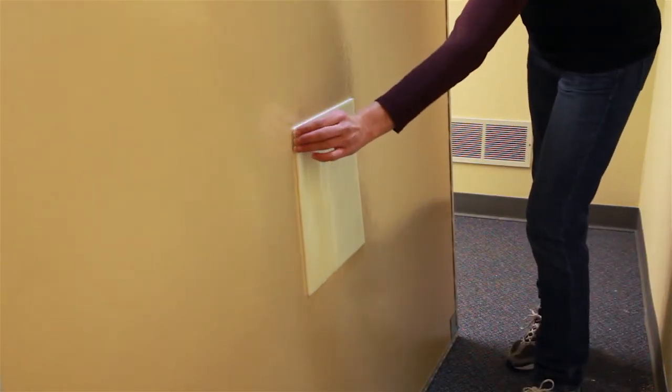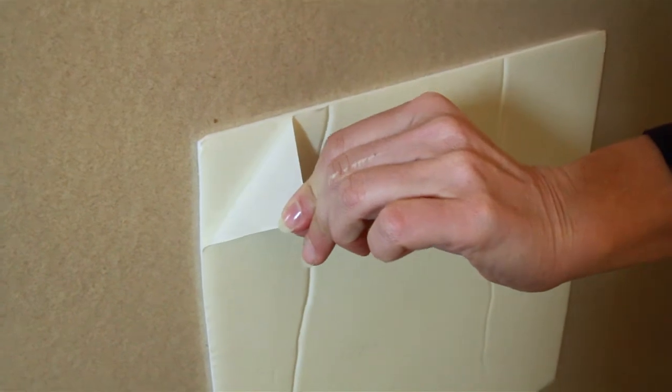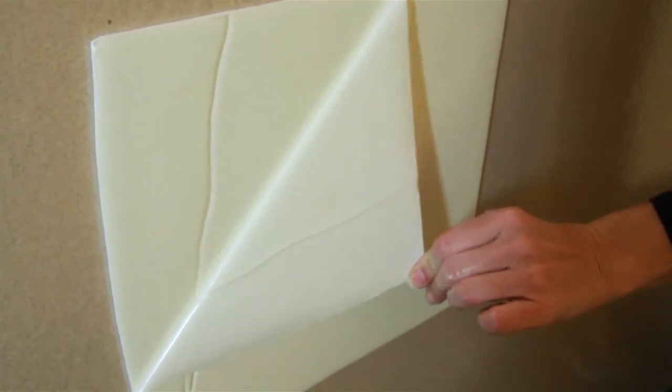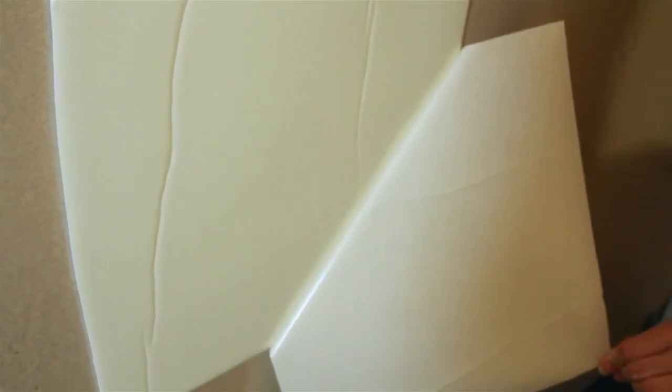Remove the release liner on the back of the board to expose the adhesive prior to mounting the board. Note, this step does not apply to boards under six feet.